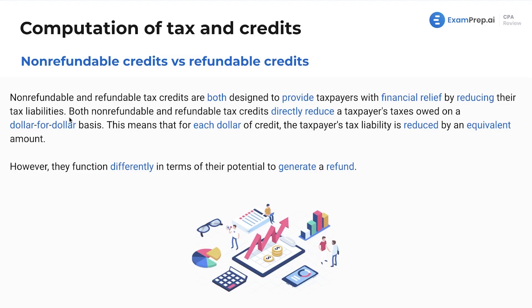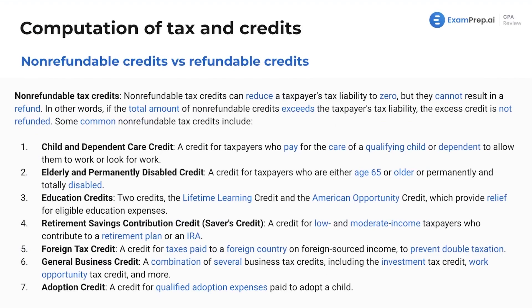Essentially, non-refundable means you can't go below zero — you're not going to get a refund. Refundable means you can get a refund if you go below zero of taxable income. We're going to deal with our non-refundable credits first. Make sure you memorize which of these credits are non-refundable versus which are refundable.